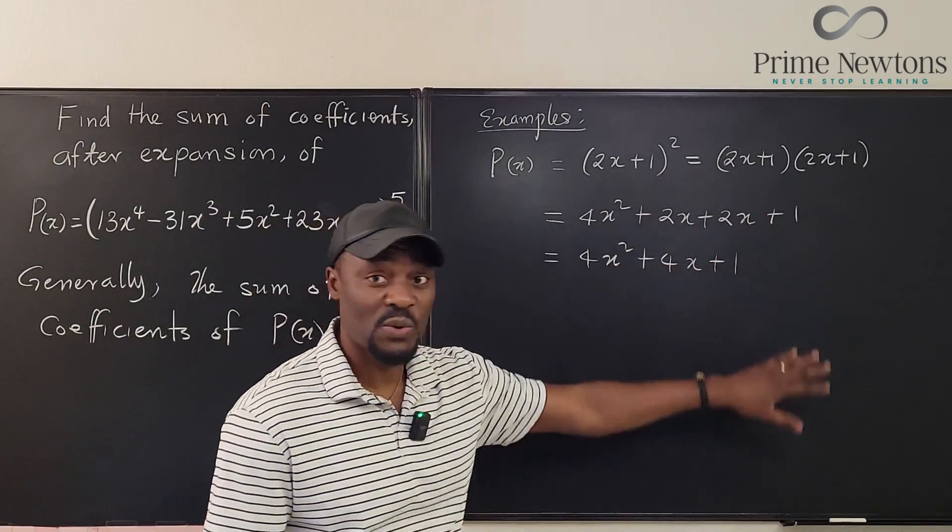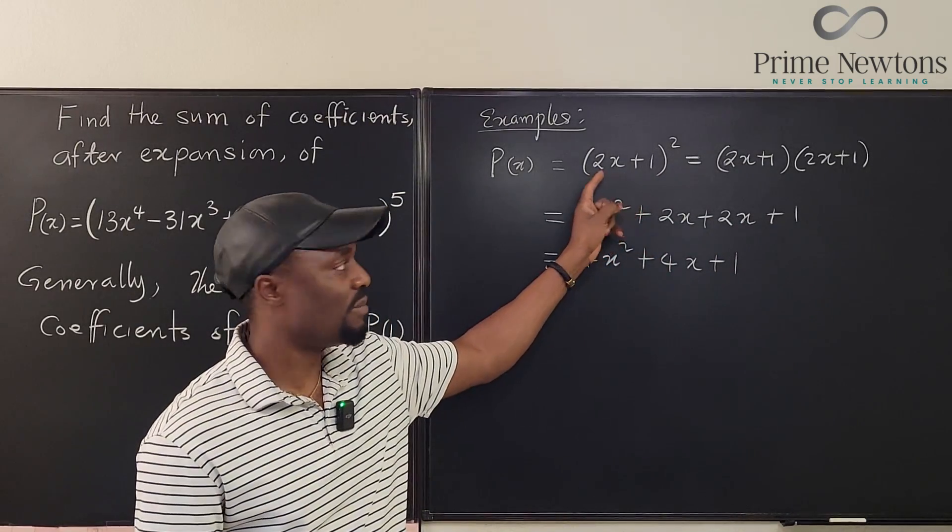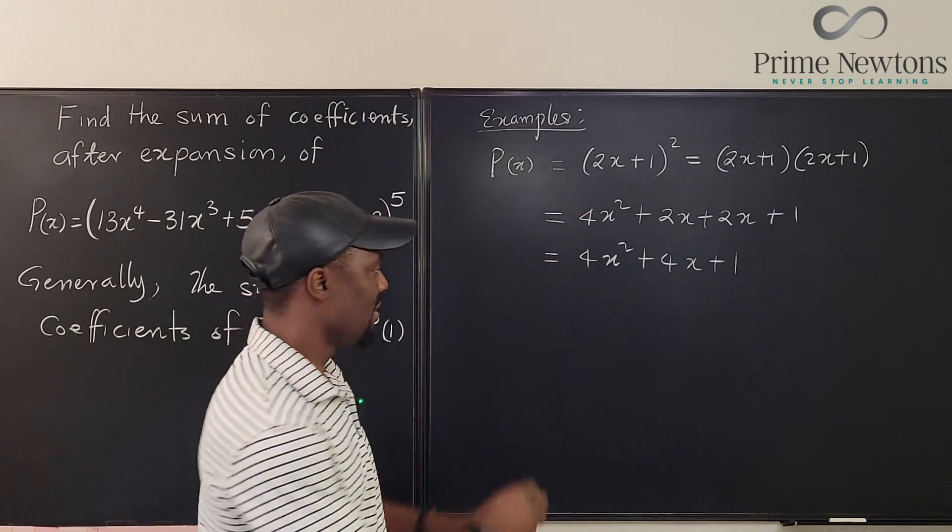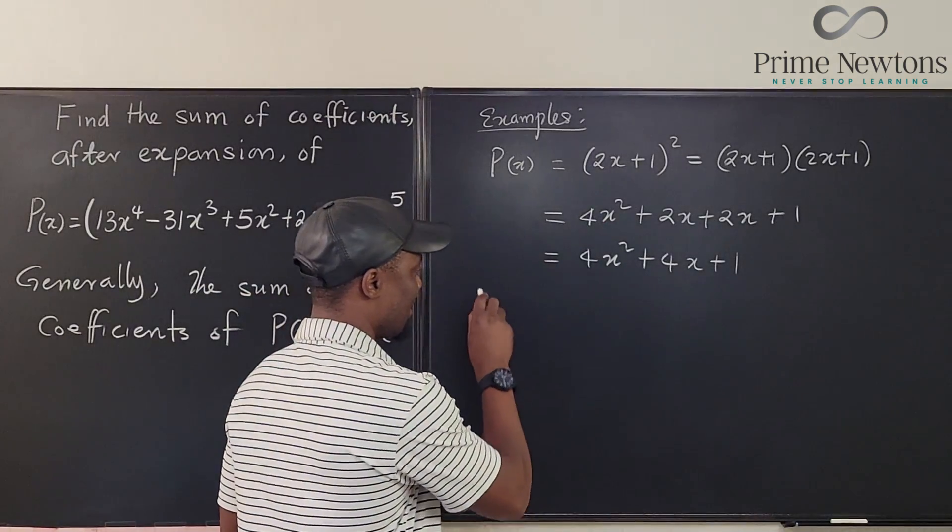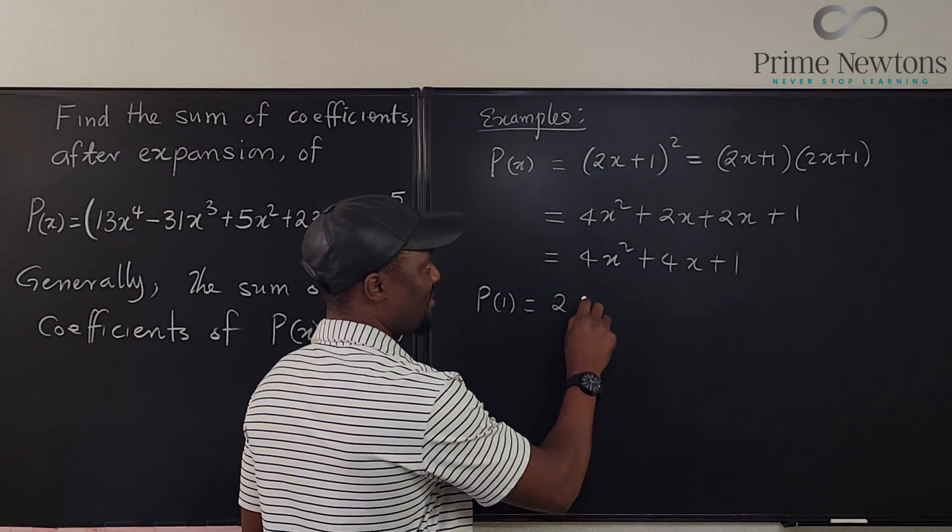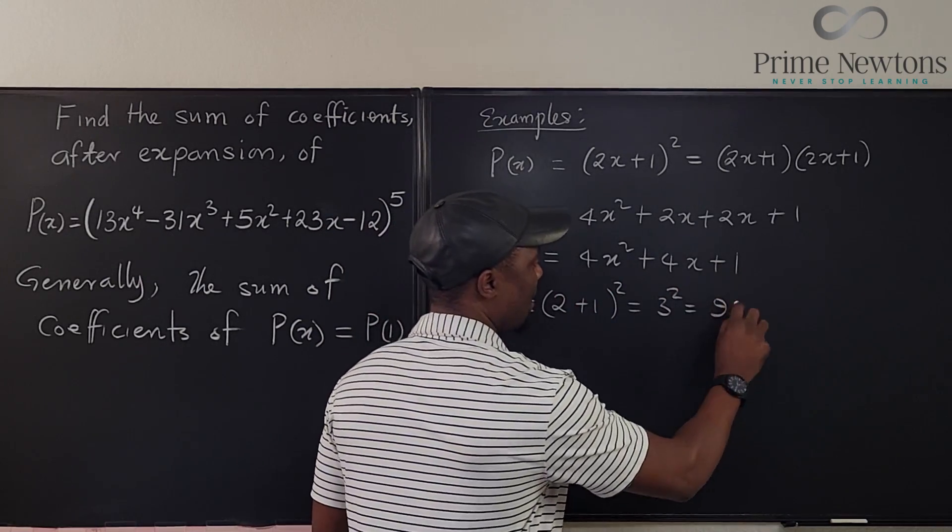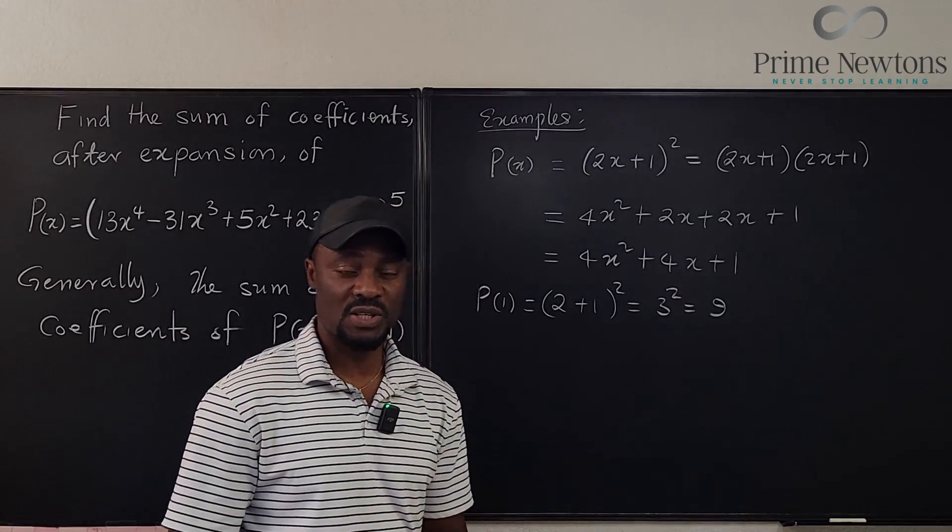Well, you didn't have to do all this expansion. You could have just plugged in one here from the beginning. If you plug in one, it's going to be P of one will be two plus one squared, which is three squared, which is nine, which is the sum of the coefficients here.